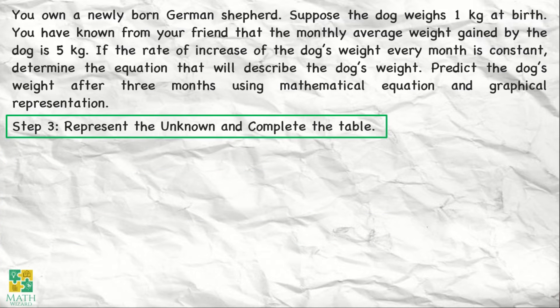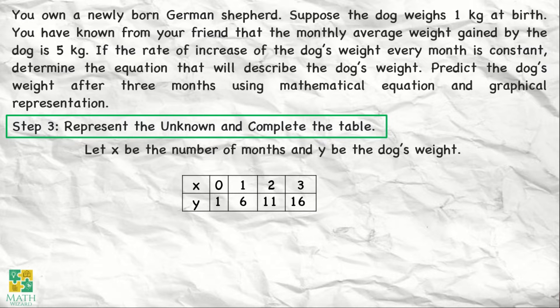For step number 3, we need to represent the unknown using a variables and then we need to complete the table. We let x be the number of months and y be the dog's weight. And this would be our table. Ang ating x is the number of months, ito yung independent variable natin. Ang y naman, the dog's weight, ito yung dependent variable natin.